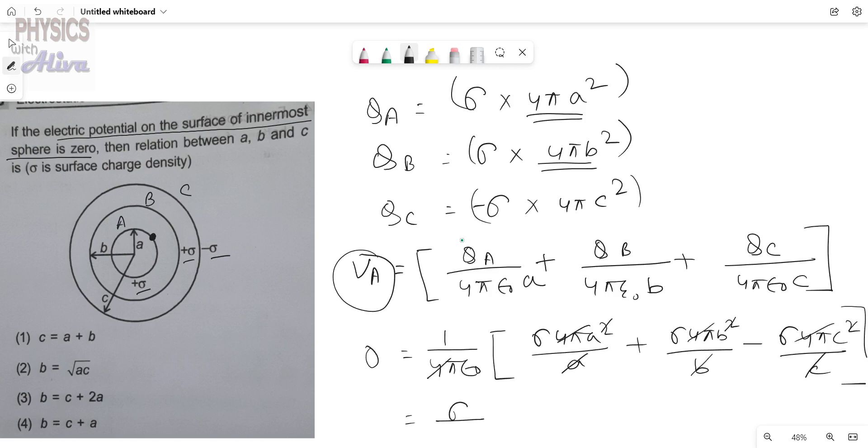So we get σ/ε₀ in bracket we will get A plus B minus C. This is equals to 0. So from here we will get, I am writing this here. From here we will get A plus B is equals to C.